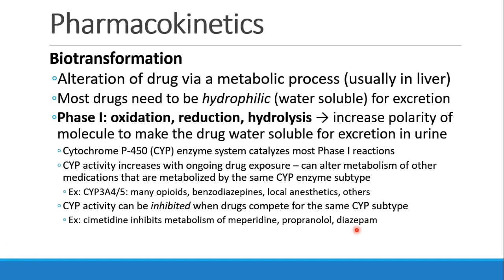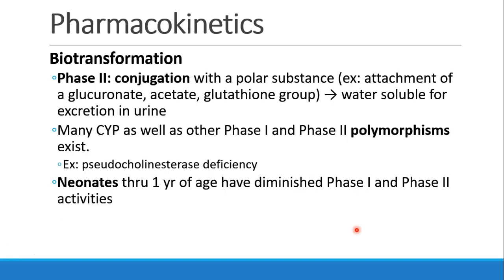Those are phase 1 reactions. We also have phase 2 reactions, where instead of putting the molecule through an oxidation or reduction reaction, we conjugate it — we add another polar substance. We attach something like a glucuronate or an acetate group onto the molecule, and that makes it more water-soluble so it can be excreted in the urine. Those are phase 1 and phase 2 biotransformation reactions.